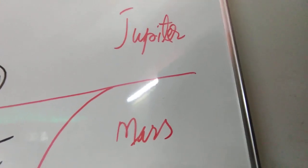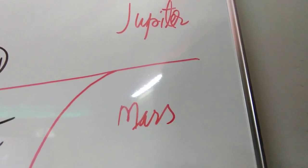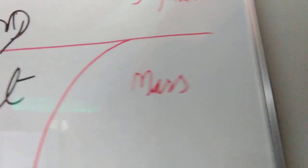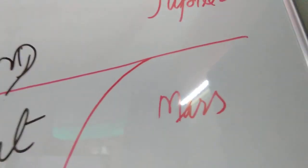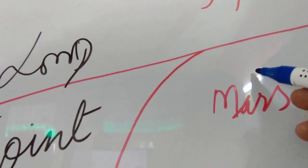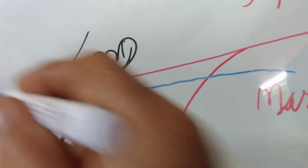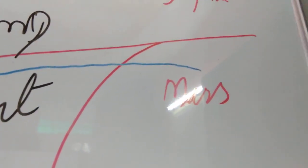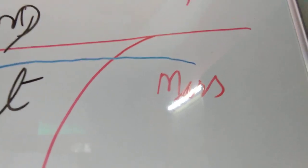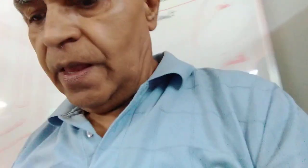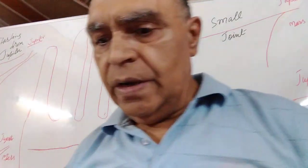The next variant is when the line starts between Jupiter and Mars and forms a long joint. The fifth variant is when the line of head starts from Mars. Beginning from Mars is not that auspicious — it's not that good for the possessor.